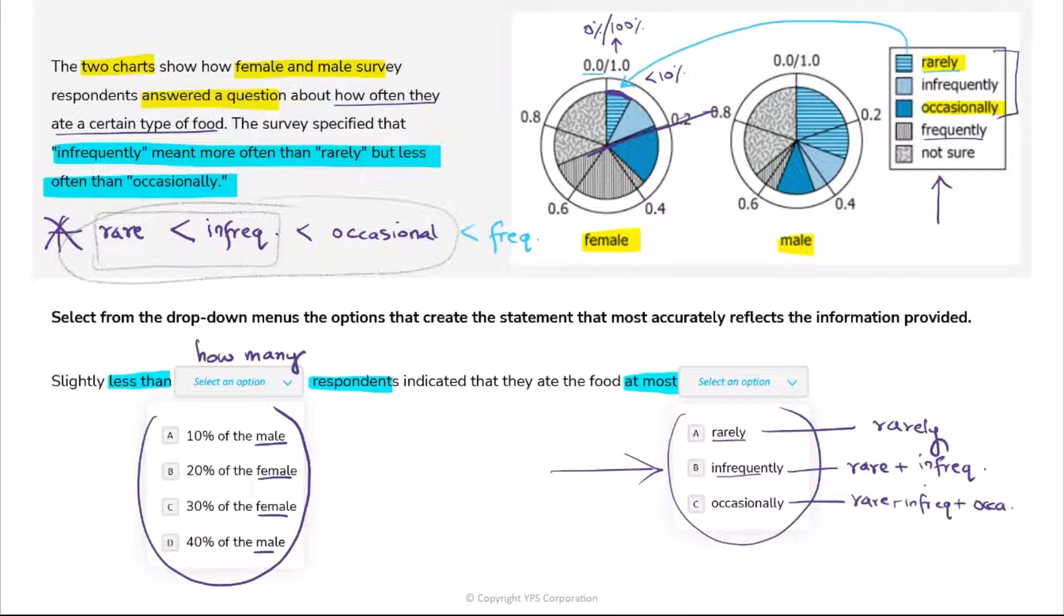Let's now get back to the solution at hand. So if I say put rarely here, then I will say slightly less than dash respondents indicated that they ate the food at most rarely. And you know at most rarely is simply just rarely based on the discussion. So you can ignore this. So you have to see slightly less than dash respondents indicated that they ate food rarely.